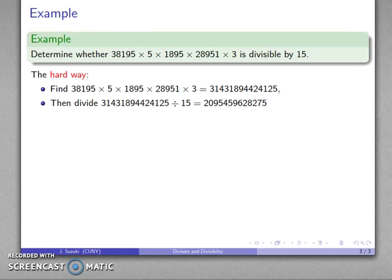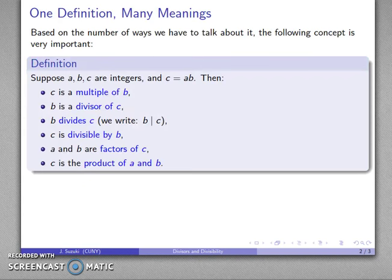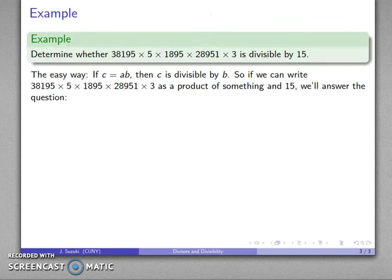And this is the hardest way possible to do this problem. It could be done this way, but let's see if we can make this method a little bit more efficient. And how we're going to do that is we're going to go back to the definition of what it means for something to divide something else. B divides C if I can write C as the product of something times B. So our definition of divisibility, if C is a product A times B, then C is divisible by B.